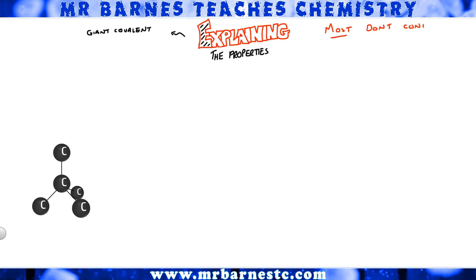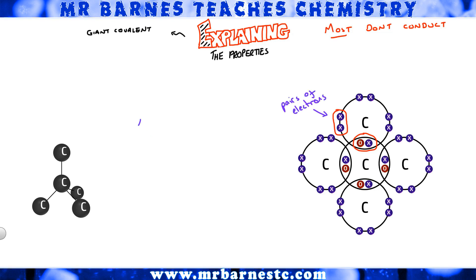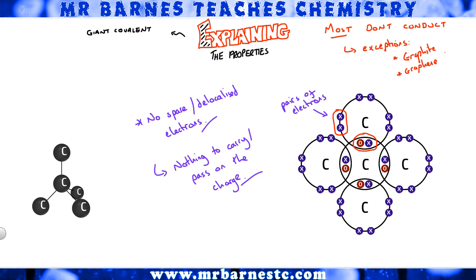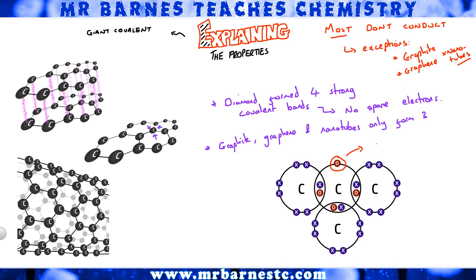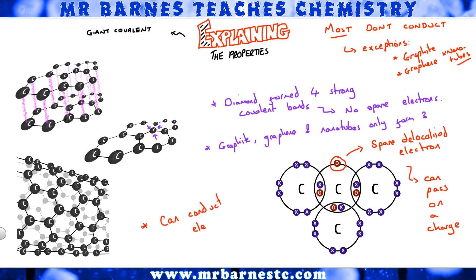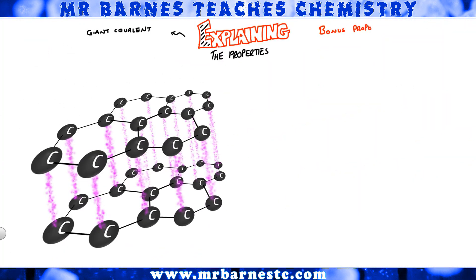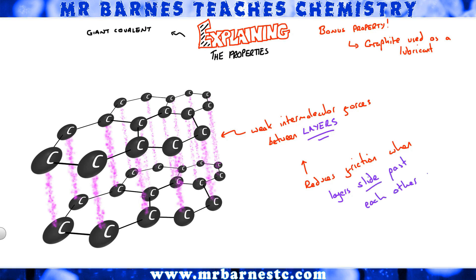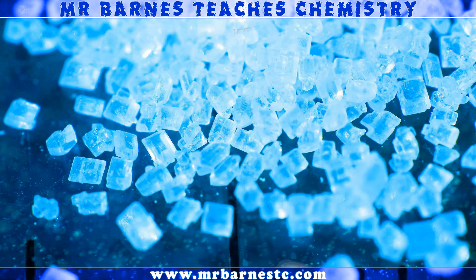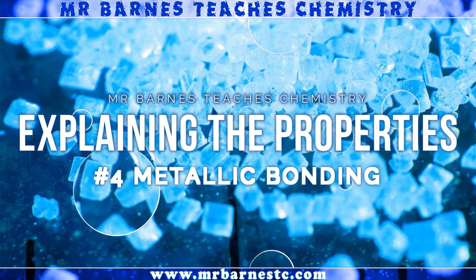Why don't most giant covalent compounds conduct? Same as simple covalent — there are no spare or delocalized electrons, so nothing can carry or pass on the charge. The exceptions are graphite, graphene, and nanotubes. Each of these only has three strong covalent bonds, whereas diamond has four, meaning there is a spare delocalized electron. Because it's delocalized it can carry or pass on a charge, so they can conduct electricity. As a bonus: graphite can be used as a lubricant because there are weak intermolecular forces between the layers, and those layers can slide past each other, reducing friction.